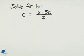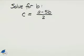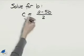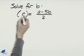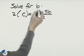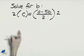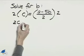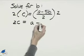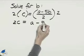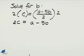When solving a literal equation for one of the variables, we need to follow the same procedure as when we're solving an equation with just one variable. We'll multiply both sides of this by 2. That will eliminate the denominator on the right. We'll have 2c on the left equals a minus 5b on the right hand side.